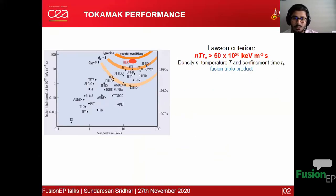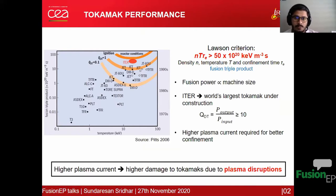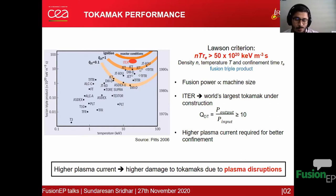Tokamak performance is given by the Lawson Criterion, which describes the fusion triple product: density, temperature, and confinement time. In the last few decades there has been a drastic improvement in tokamak performance, as you can see in this figure, and fusion power increases proportionally to machine size. Currently ITER is the world's largest tokamak under construction, aiming to achieve Q ≥ 10, meaning at least 10 times more output power than input power. Higher plasma currents are required for better plasma confinement.